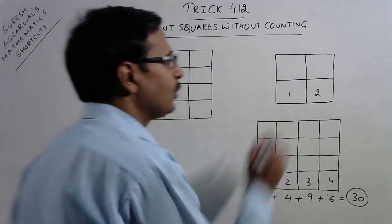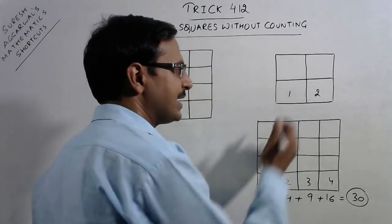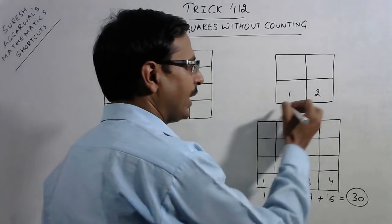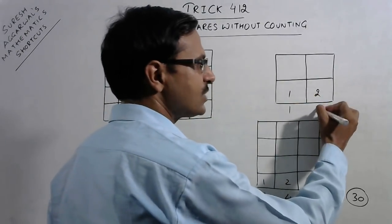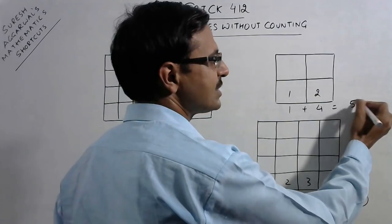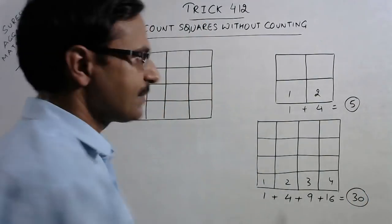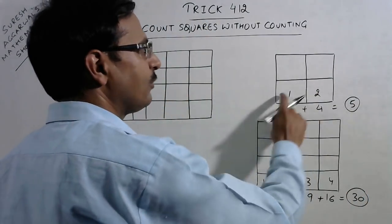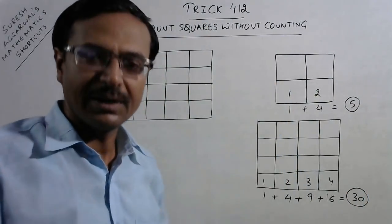Likewise, you can solve a smaller example very easily. 1 squared is 1, 2 squared is 4. So the total number of squares in this figure is 5 — 1, 2, 3, 4 small squares and the larger square that is the fifth square.